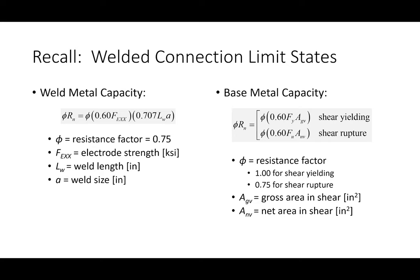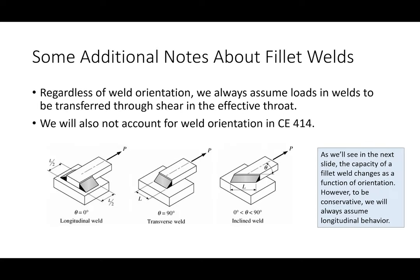One issue that comes up is weld orientation. Imagine a plate being pulled in tension with different weld configurations: a longitudinal weld (parallel to load direction, essentially in shear), a transverse weld (perpendicular to load, essentially in tension), and inclined welds in between. As a practicing engineer, you're the one deciding weld placement. I propose you should never design a connection with only transverse welds — always use transverse welds in concert with longitudinal welds.